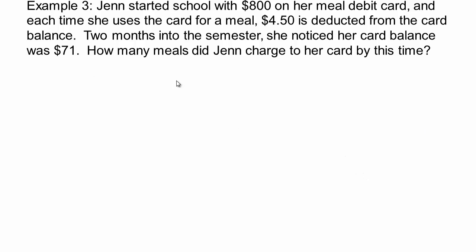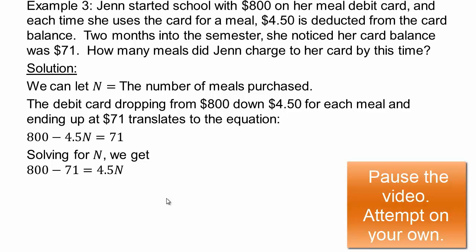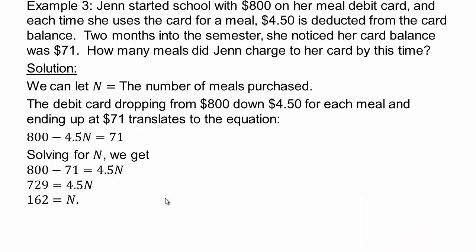Again, how many meals? So let's take that as our variable. Let's say n is the number of meals that Jen purchased. So since the debit card is dropping from 800 down $4.50 for each meal, and we have n meals, we're going to have the following: 800 minus - minus means you're taking away $4.50 for every meal - $4.50 times n, and that is 71 dollars. That's the balance on the card left. And then solve for n. You know how to do that now. Go ahead, pause the video and continue. Alright, so you should end up with 162 for n. And so that means Jen purchased 162 meals.